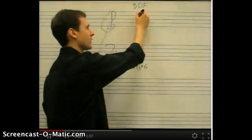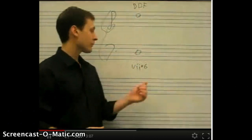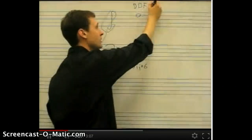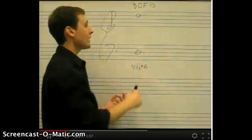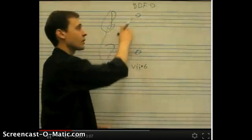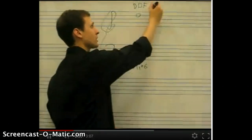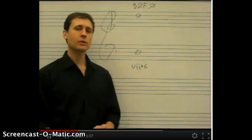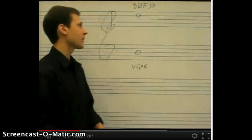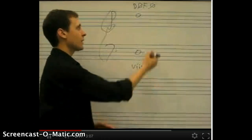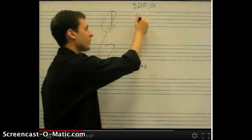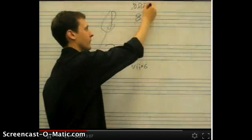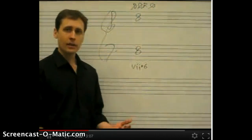First, let's get the soprano note D. Remember with the first inversion triad, you double the soprano, so we're going to need two Ds. In this case, the bass and the soprano are the same note, so we've taken care of both Ds. When the bass and soprano are the same note, we use open or close structure. For example, we can give the alto this B here, and then we would give the tenor an F. And everything's good.